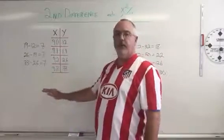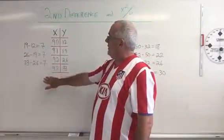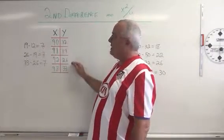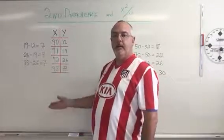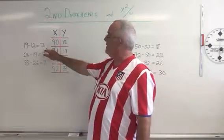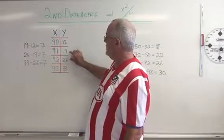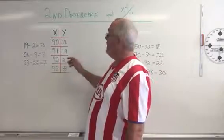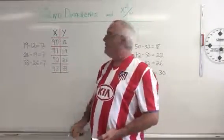We use the constant difference trick to figure out whether the points in a table of values represent a linear function. We subtract, find the difference between adjacent pairs of y-coordinates to see if we get the same answer, the constant answer.